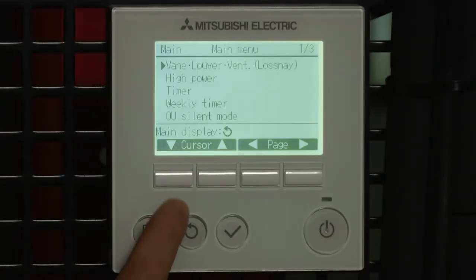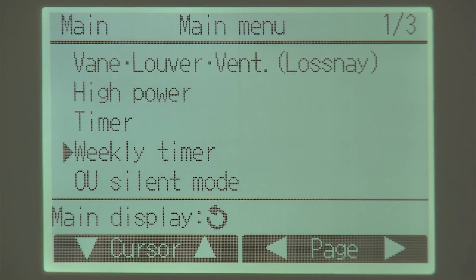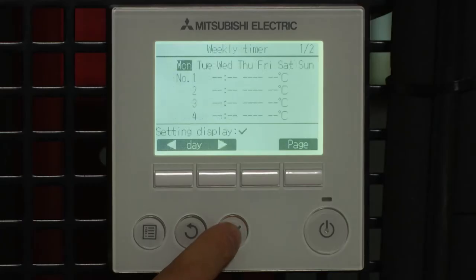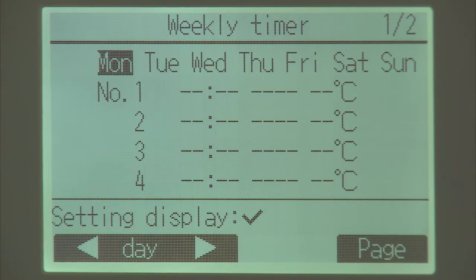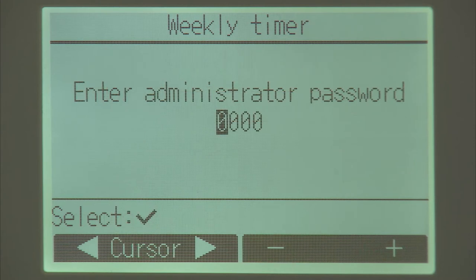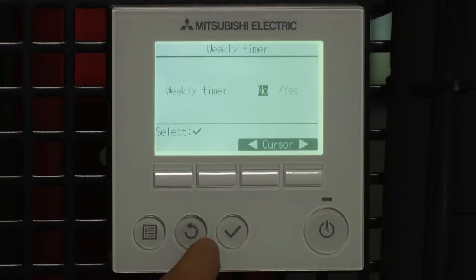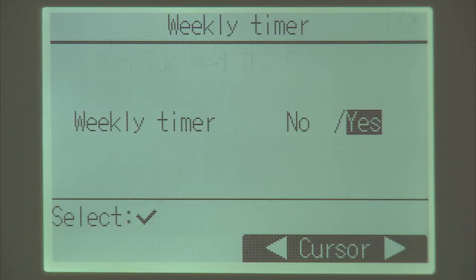Select on the menu option and scroll down to weekly timer. Tick to accept and tick to make changes. It's going to ask you for a password which is four zeros. We specify we do want to use weekly timer. Tick that.